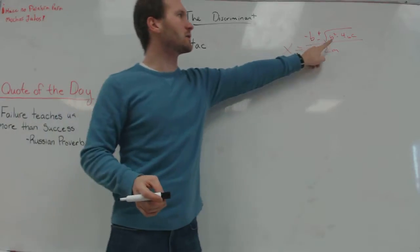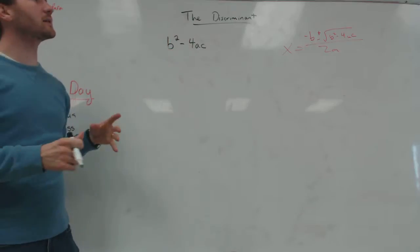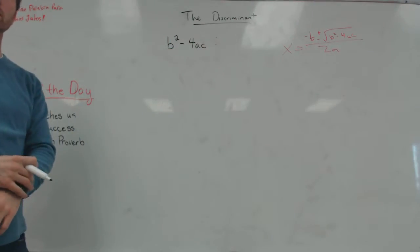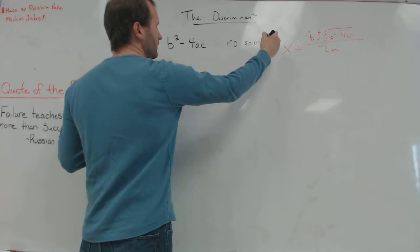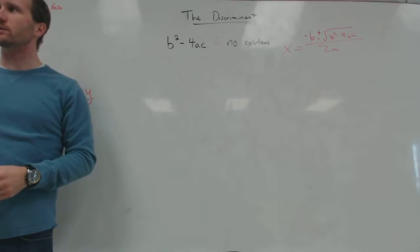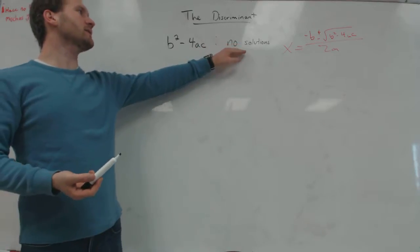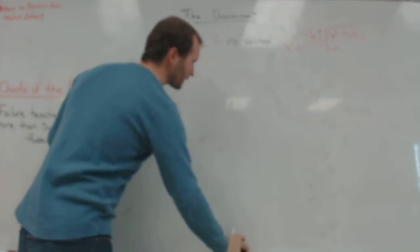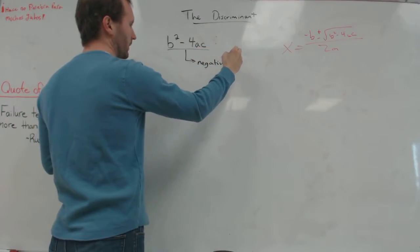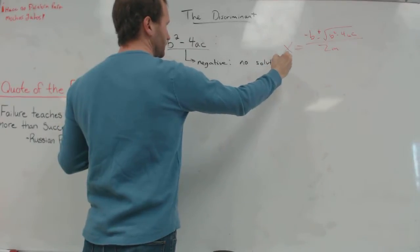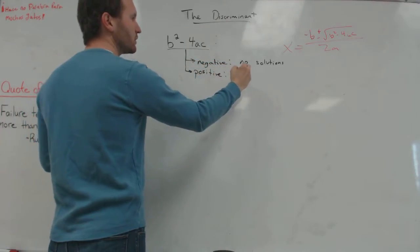The discriminant is the expression under the square root. If it's negative, you'd have the square root of a negative number, which means no real solutions — in Algebra 2 you'll learn about square roots of negative numbers, but for now: if the discriminant is negative, there are no solutions. If the discriminant is a positive number, then we're going to have two different solutions.